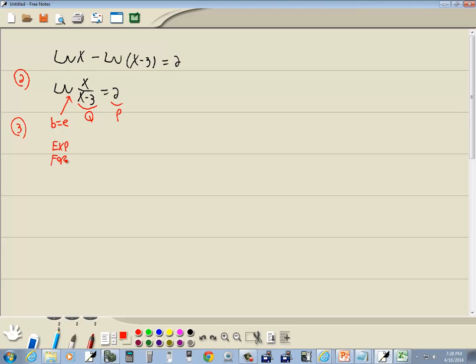Now our exponent form is b to the p equals q. Well, we said b was e to the p, which is 2, equals q, which is x over x minus 3.